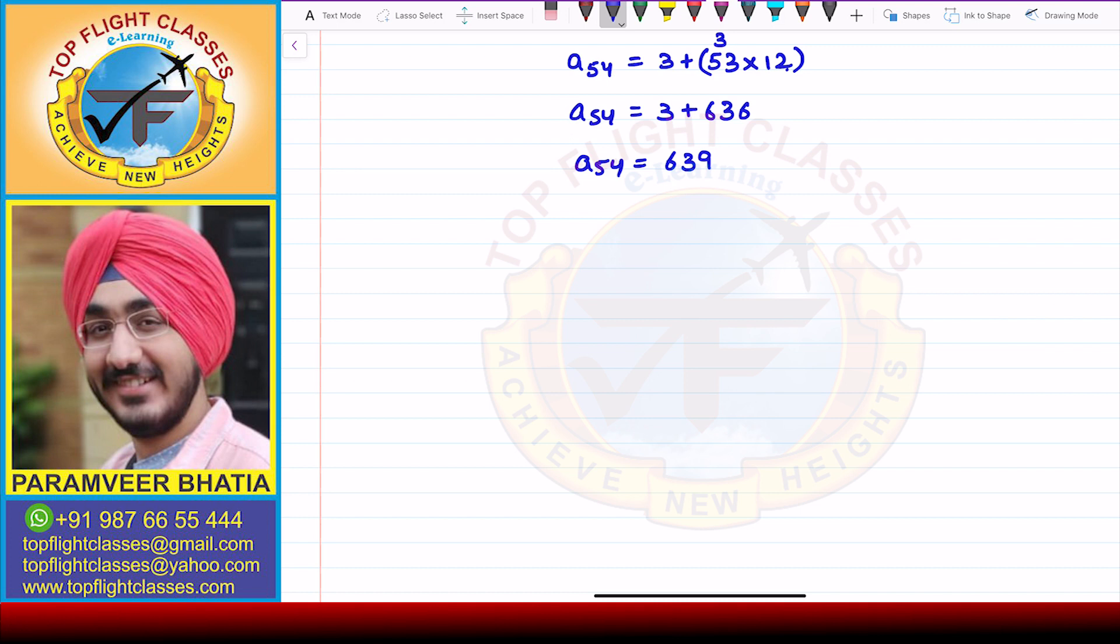Now, we want to find 132 plus 639. Which term will be? So AN will be 639 plus 132. If we write here 639 plus 132, 9 plus 2 is 11, 3 plus 3 is 6 plus 1 is 7, and 6 plus 1 is 7. Here we get that AN is equal to 771.